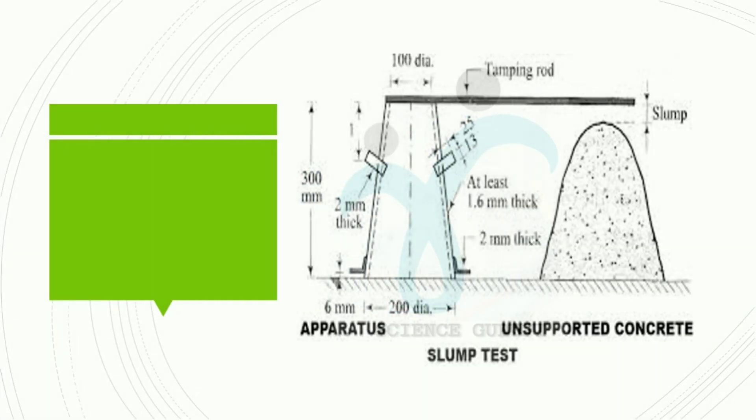Slump test procedure: we fill 4 layers of concrete into the slum cone, then vertically raise the cone and the concrete subsides, and we measure the slump.